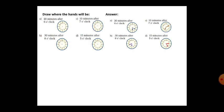Now see: 10 minutes after 7 o'clock means the time is 7:10. So the minute hand you have to draw accordingly at the correct position.